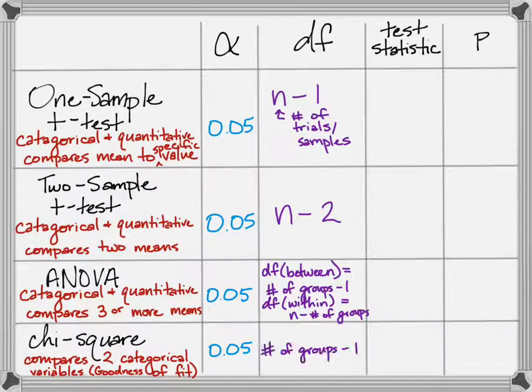For chi-square, since it's all categorical, you're going to take the number of groups that you're using for something called observed and expected and subtract one from that. So if we have four different things that we're looking at, our degrees of freedom is three.